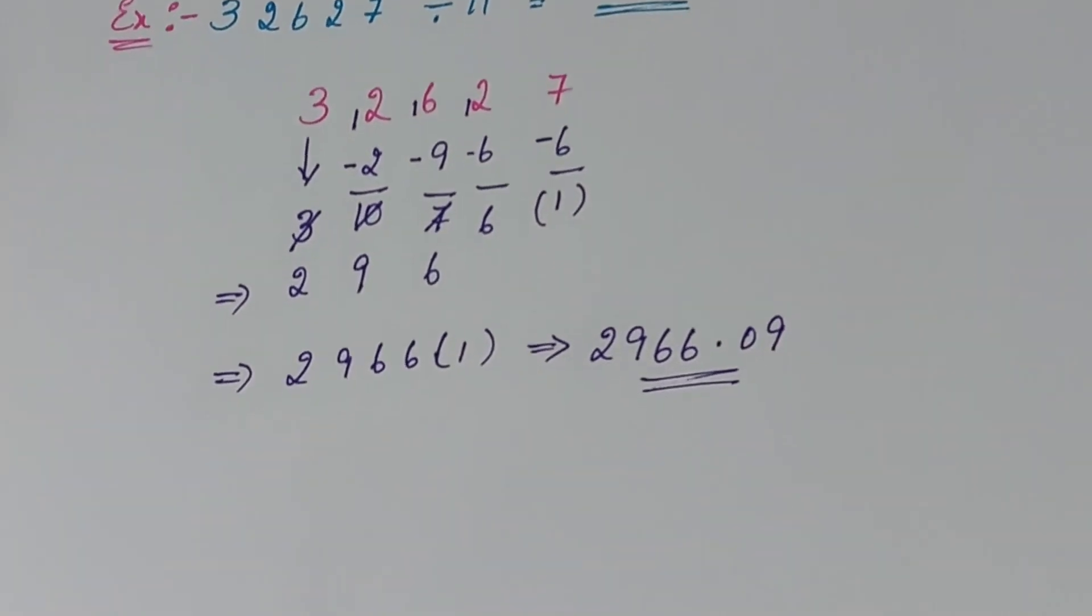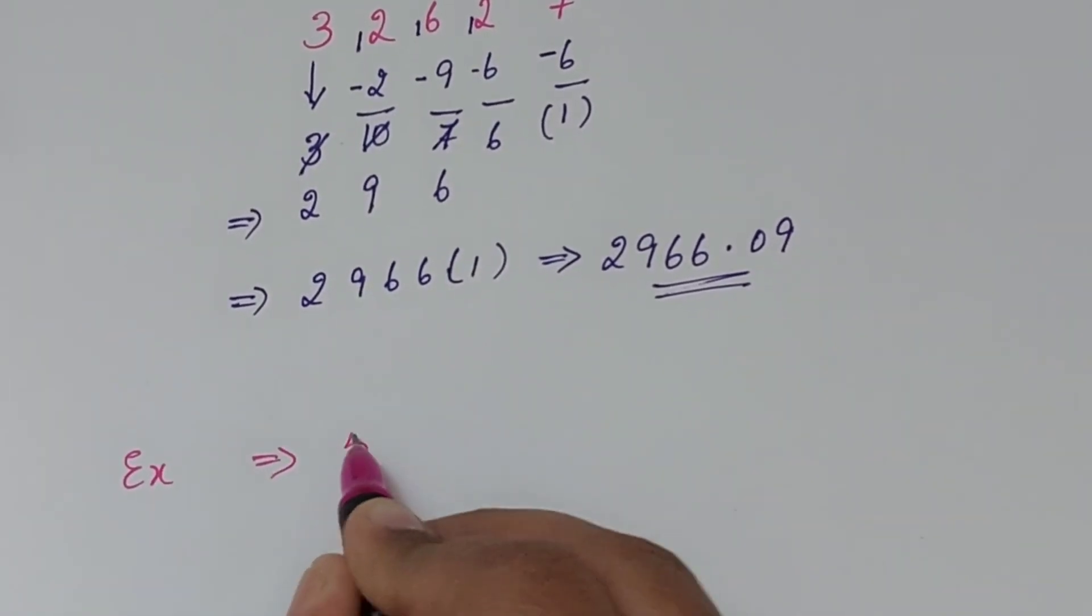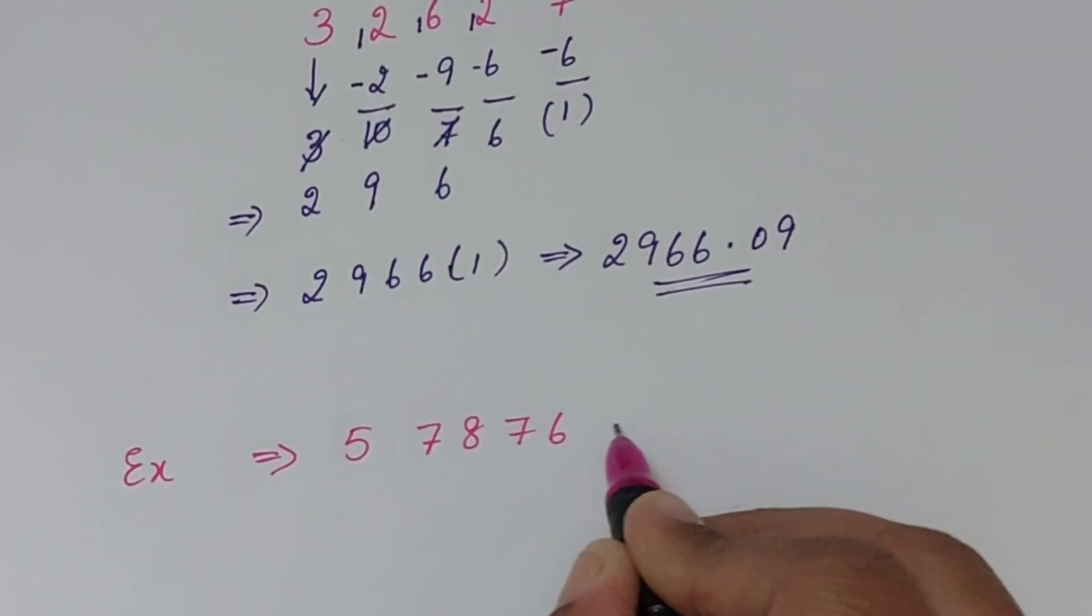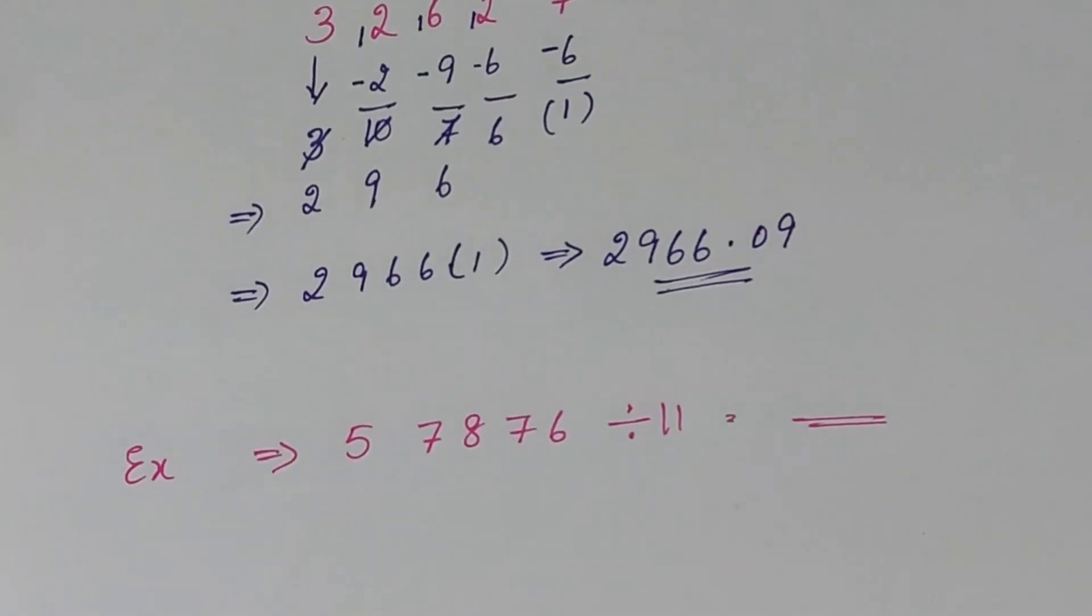Just play like a game. So I am going to take the next number. For example, next example will be 5, 7, 8, 7, 6 divided with 11 here. So let us try. Give a bit gap between the numbers so that we will not get any confusion.